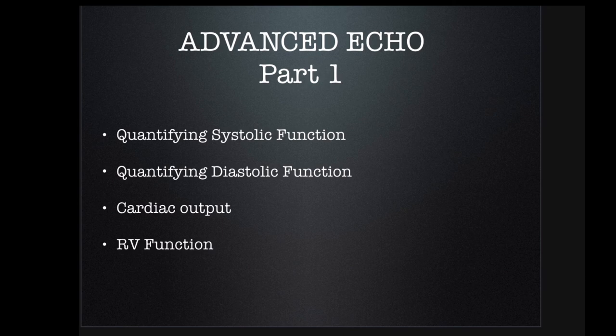I don't think quantifying LV function is very helpful for most of what we do. Even in the ICU, knowing the ejection fraction went from 40 to 50 isn't that helpful, because you're using clinical aspects — if you gave dobutamine, did perfusion improve? It is helpful to understand how these calculations are done, so you know why the cardiologist got an EF of 50 when you said it was 30.